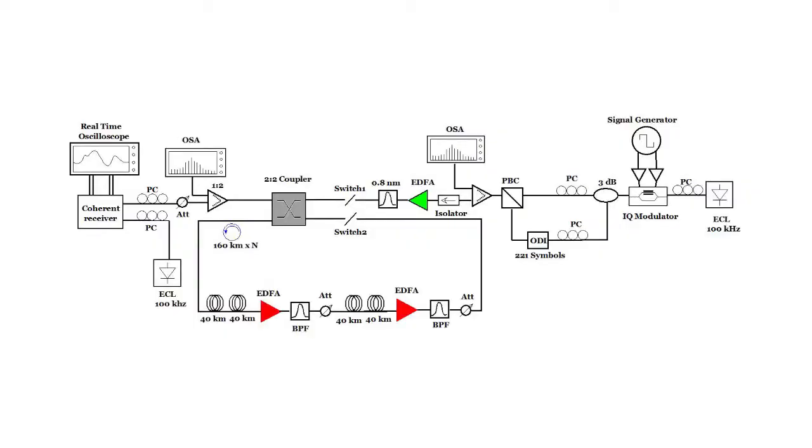This is our general setup for this technique. It consists of signal generator, laser, IQ modulator, three amplifiers and after each there is one band pass filter and attenuator. We have two spans of 80-kilometer fiber that is totally 160-kilometer fiber, two optical switches, coherent receiver and real-time oscilloscope.